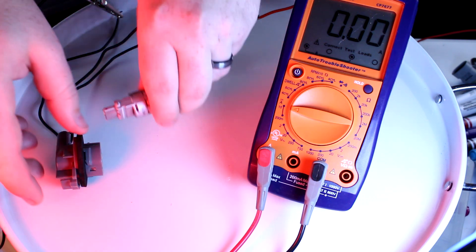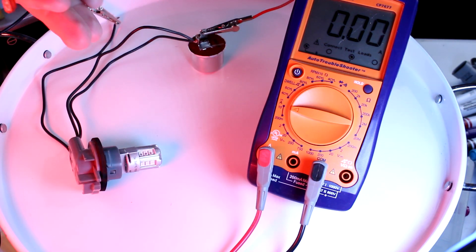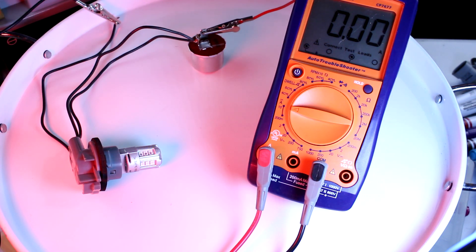What happens if we use an LED bulb instead? Now LEDs on their own have a lot less resistance, but most of these units have built-in resistors, so it's going to have more resistance than a normal bulb.